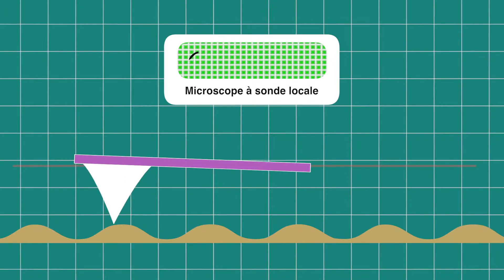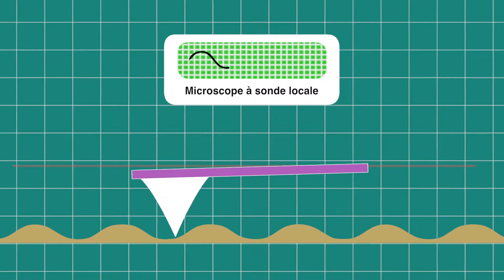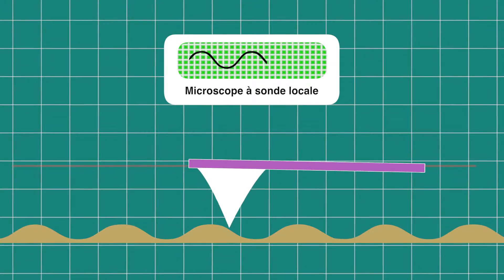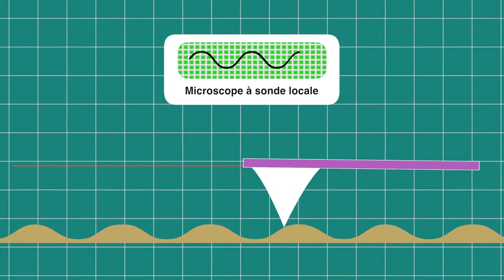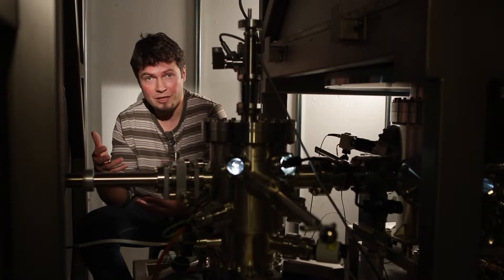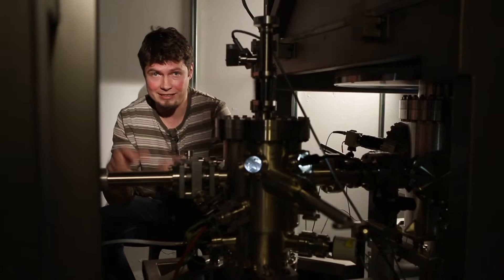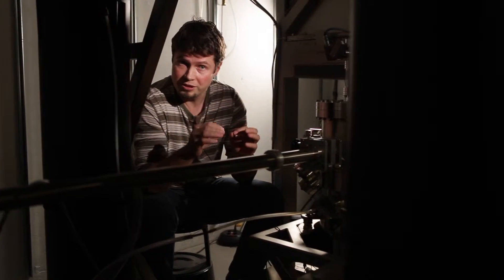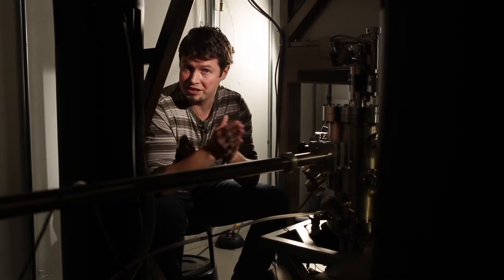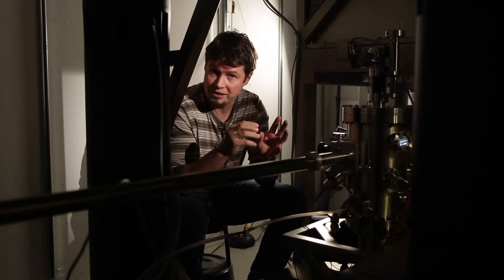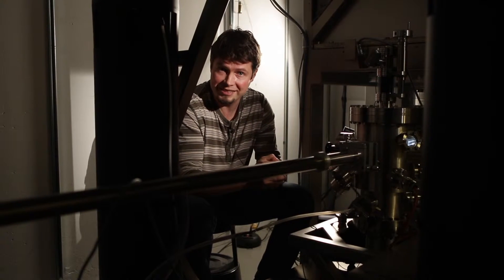And the needle runs over the surface and reads the map of the city like a vinyl record. But how can it be useful? Well, imagine like our hands can move objects around us. The needle can be used to move the basic objects inside the material, the walls and bricks, to change the map of the city.